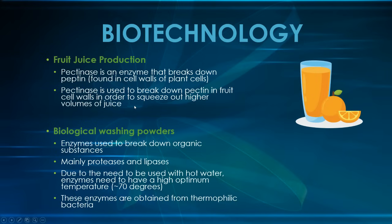In biological washing powders, you have enzymes that break down organic substances, making certain stains go away more easily. The main enzymes you'll find are proteases. Quite often you'll have to extract these specific enzymes from bacteria that live in fairly hot conditions, because you need to use hot water with these washing powders, so you need enzymes that don't denature at high temperatures.